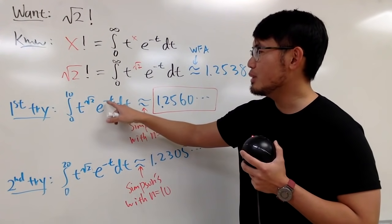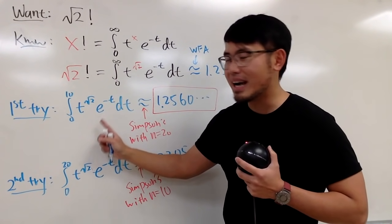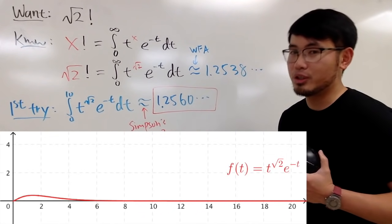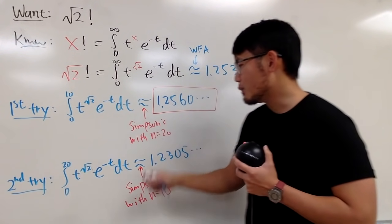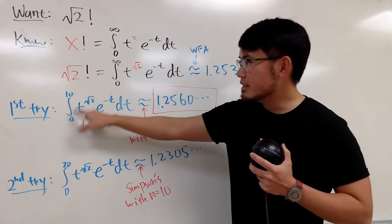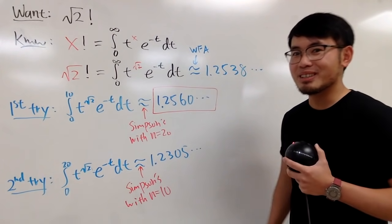Here's a quick reason why from 0 to 10 is actually just enough. Well, when you have e to the negative t, this right here, multiply with this. In fact, this actually converges pretty quickly, so from 0 to 10 is pretty good. And once again, if you focus on this interval with a bigger n value, yeah, you get a better answer.